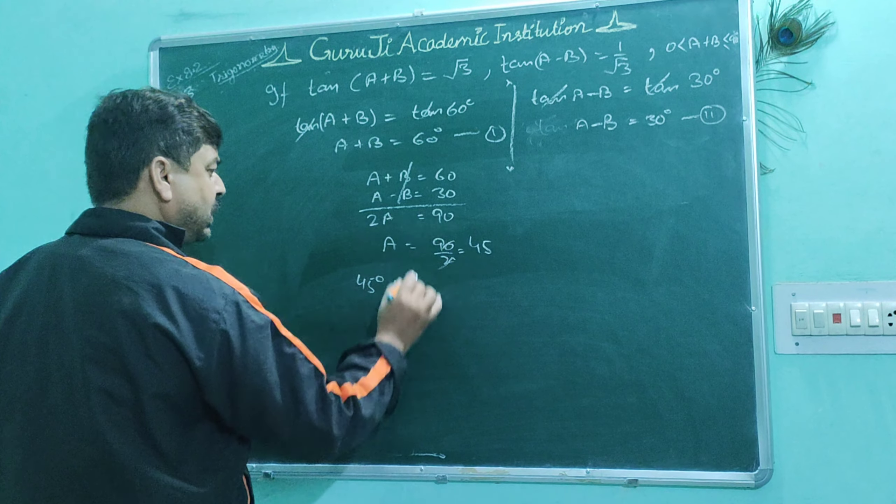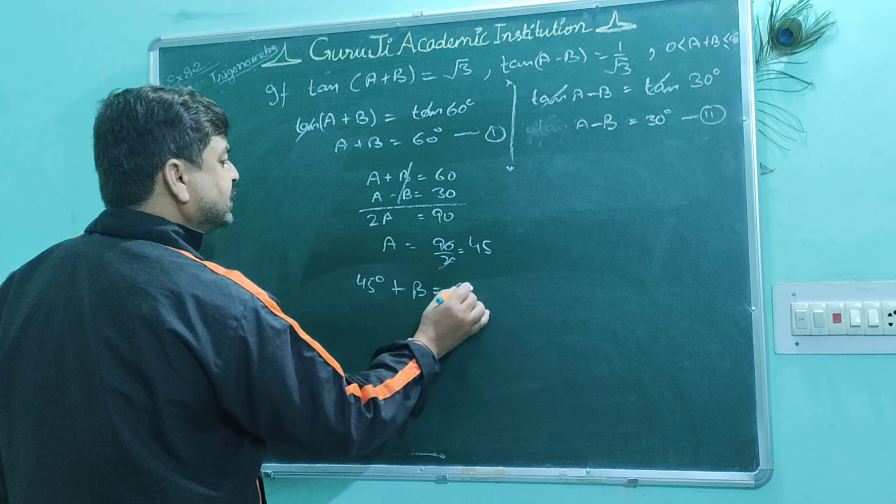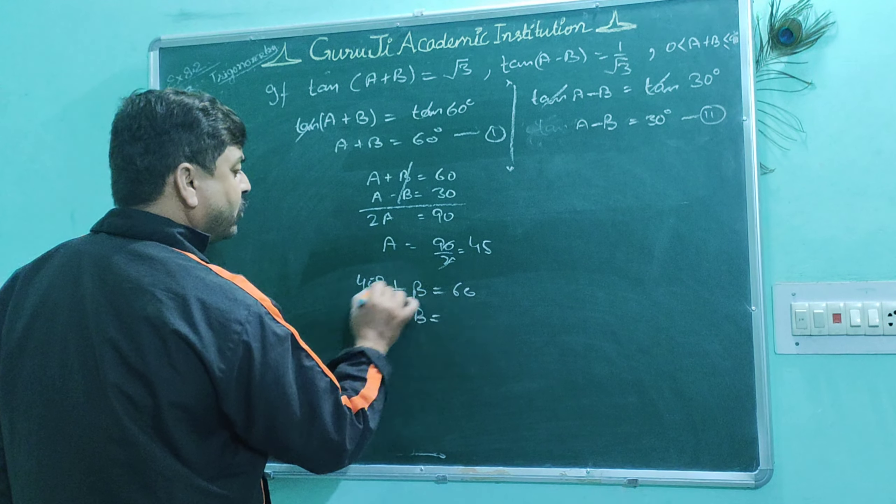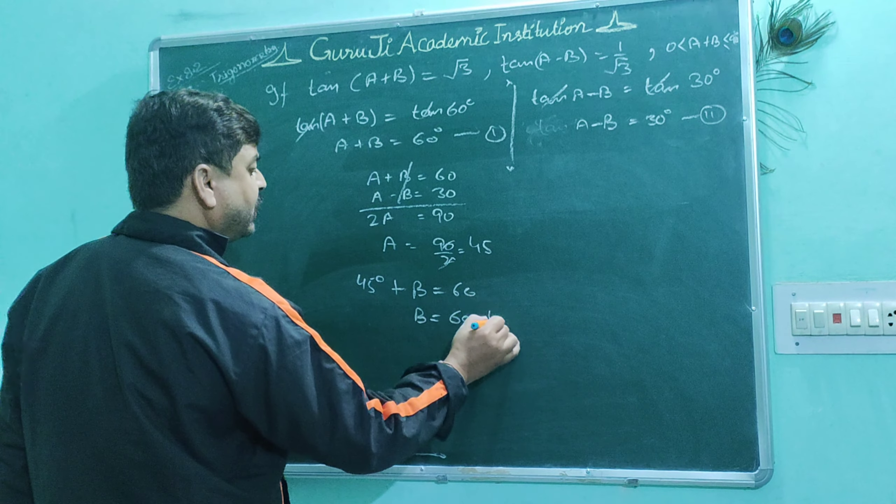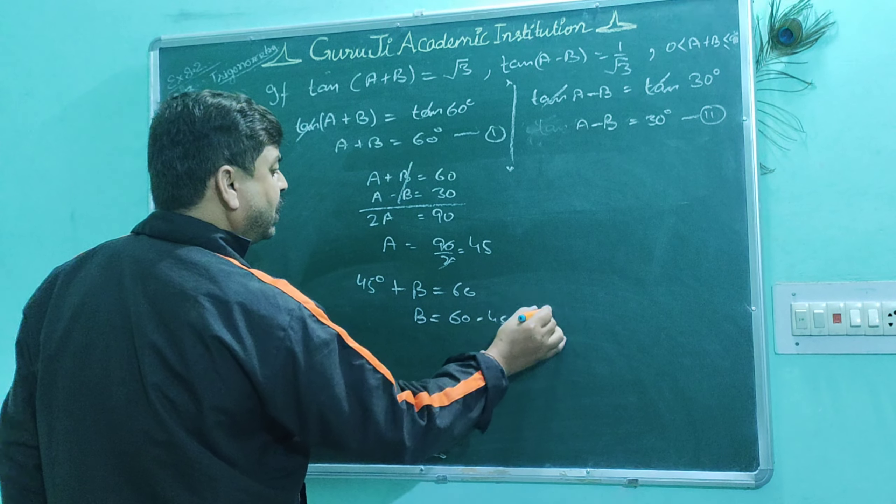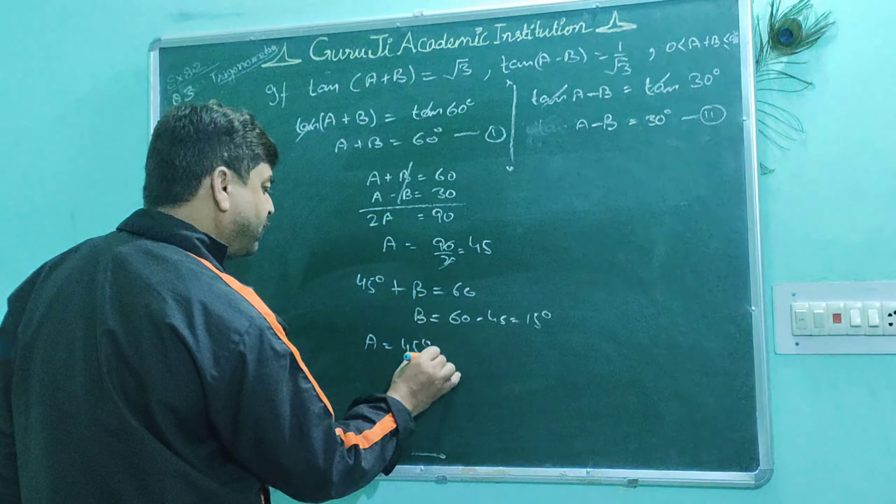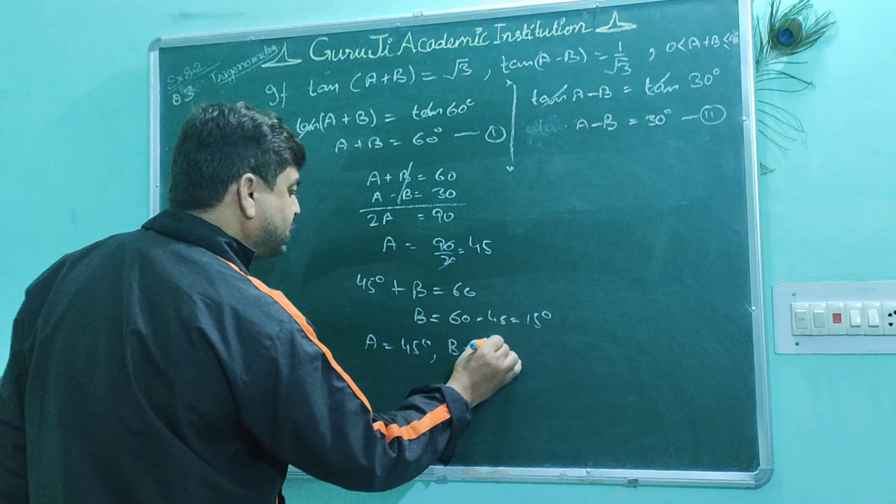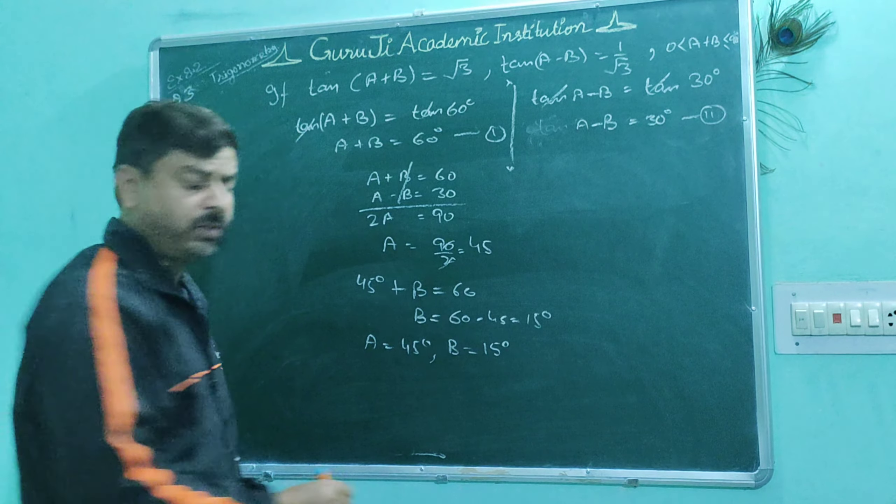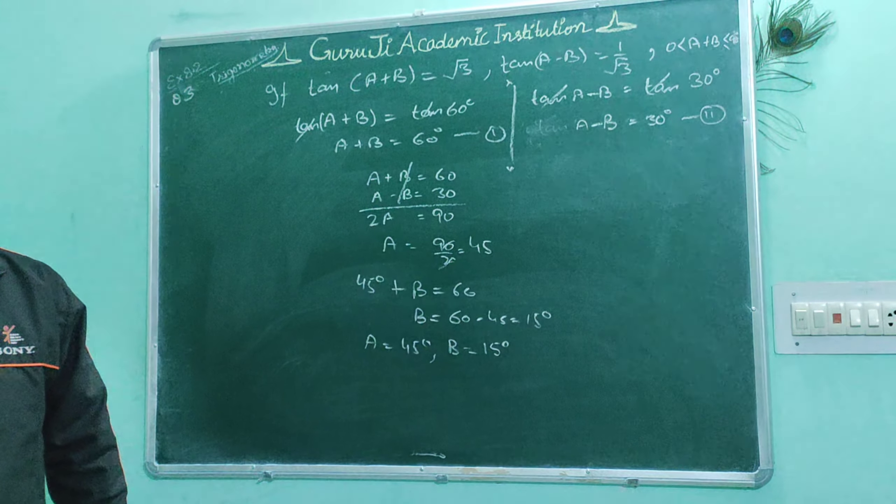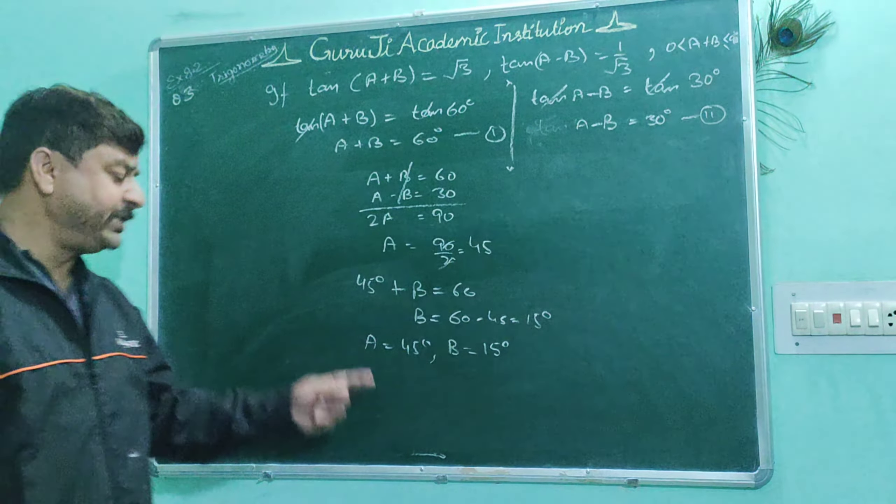Now substituting a = 45 degrees back: if a is 45, then from equation one, 45 + b = 60. So b = 60 - 45 = 15 degrees. Therefore, our answer is a = 45 degrees and b = 15 degrees. Question number three complete.